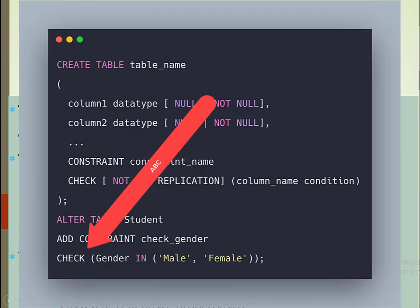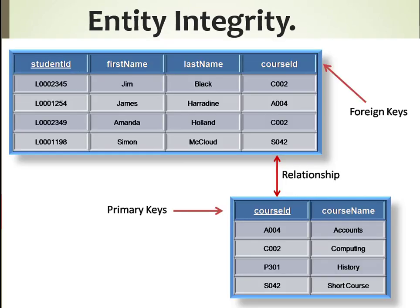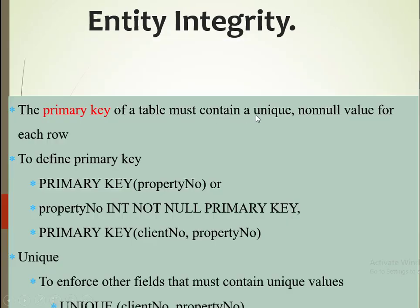The next one is entity integrity. In this case, we look at the concept of the primary key and the foreign key. A primary key is a unique identifier within a particular relation, and being a unique identifier, it must contain a unique non-null value for each row.